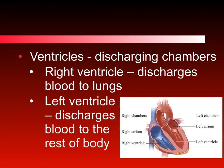The two lower, larger chambers are called ventricles. These are the discharging chambers — blood leaves the heart through the ventricles. The right ventricle receives blood from the right atrium and discharges it to the lungs, carrying blood that is low in oxygen. The left ventricle receives blood from the left atrium, carries highly oxygenated blood, and discharges it to the rest of the body.